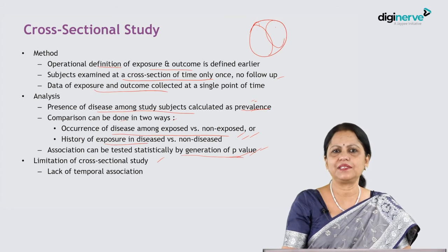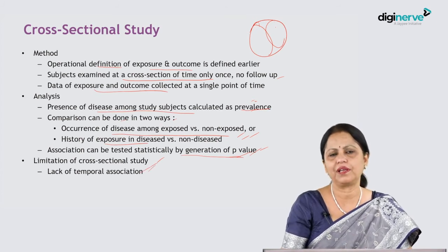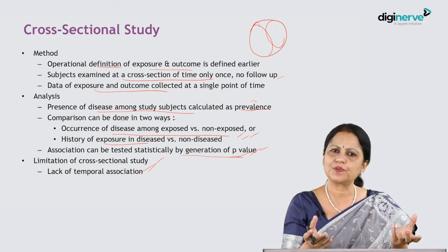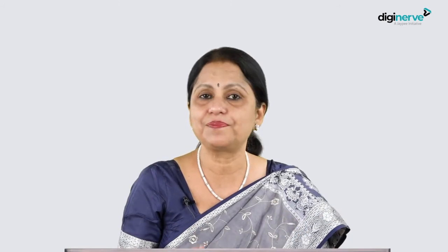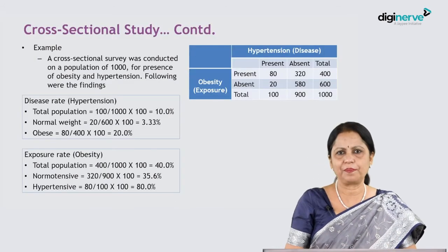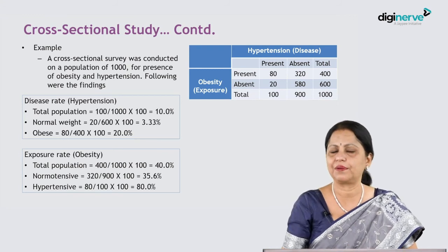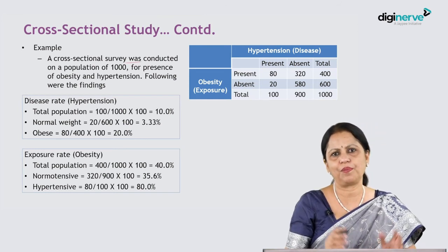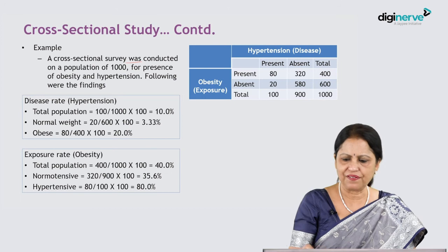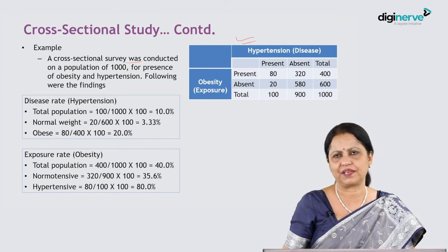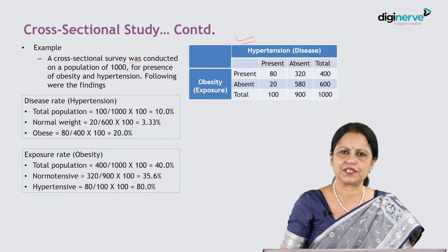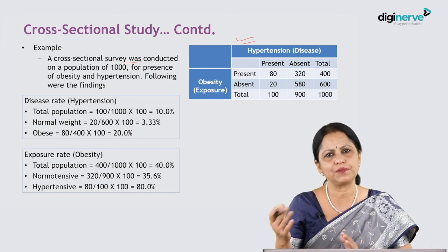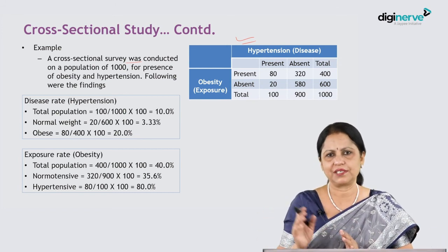The key limitation of cross-sectional study is the absence of temporal association — because it captures one point in time when both exposure and outcome have already occurred, we cannot say which preceded which. As an example, a cross-sectional survey was conducted on a population of 1000. The findings are shown in a table examining obesity and hypertension, based on the hypothesis formulated from descriptive study that obese people are more susceptible to developing hypertension, i.e., raised blood pressure.